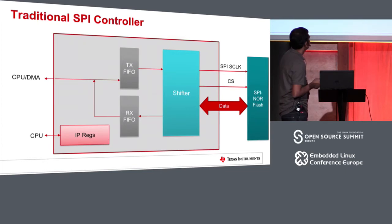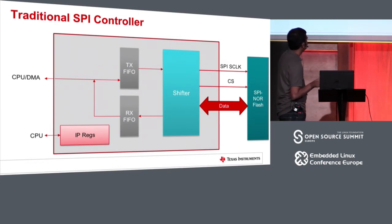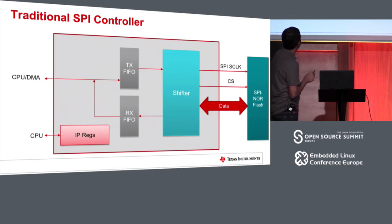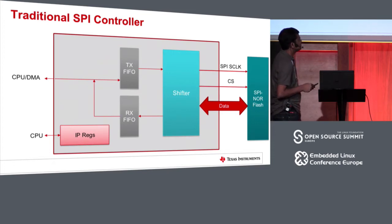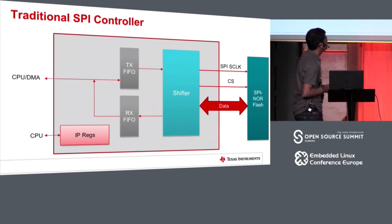Traditional SPI controllers are quite simple — they have a TX FIFO, RX FIFO, and a shifter unit. CPU or DMA would write data into the TX FIFO, and whatever is written is just shifted out onto the SPI bus. Similarly, data received from the flash device is read from the RX FIFO. Since there is direct access to this FIFO, the CPU can implement any type of protocol which gets shifted out on the bus, making it possible to communicate with any type of SPI devices. There is no notion of command phase, address phase, or data phase here.